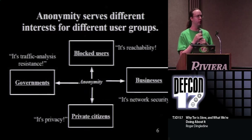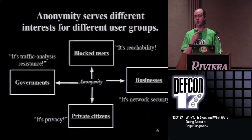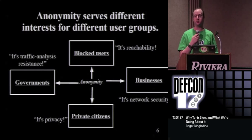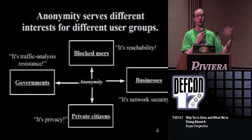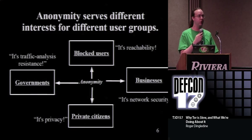The fourth category we've learned about recently are blocked users - people in China and Iran and Thailand, and the list is growing. People who can't reach all the websites they'd like to reach. It turns out if you've built an anonymity system - something that prevents a local observer from watching the user and figuring out where they're going - then they can also use it as a circumvention system. If you can't tell what website I'm going to, then you can't prevent me from looking at BBC.